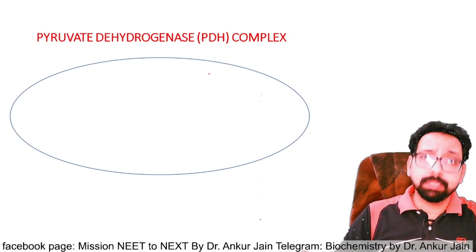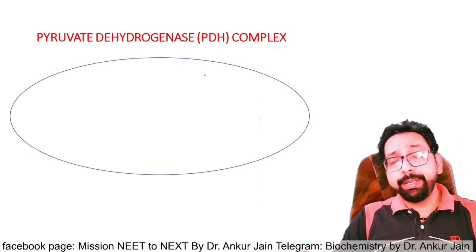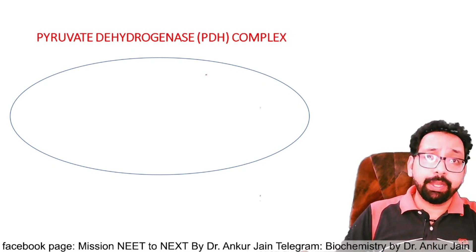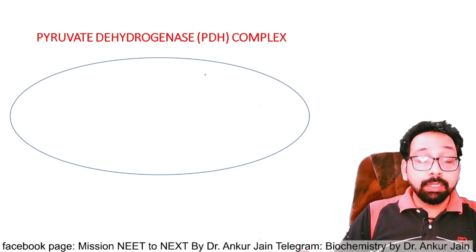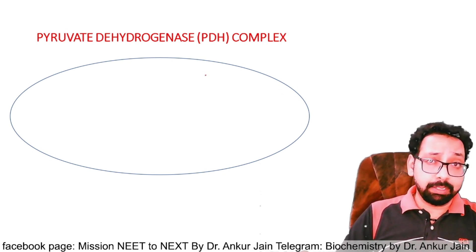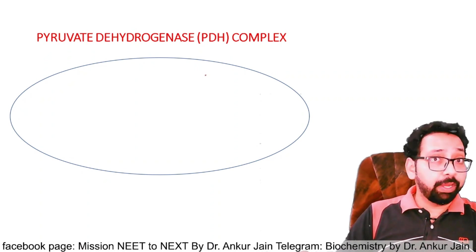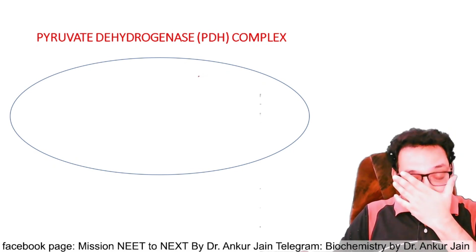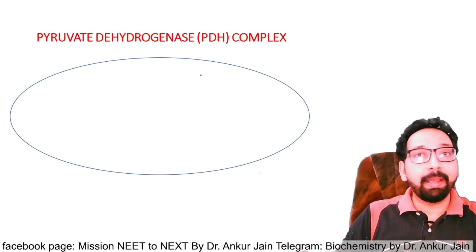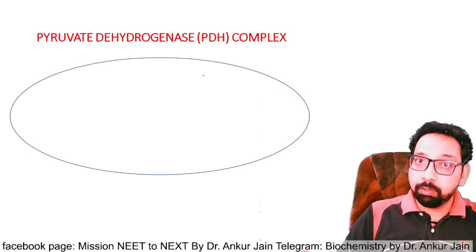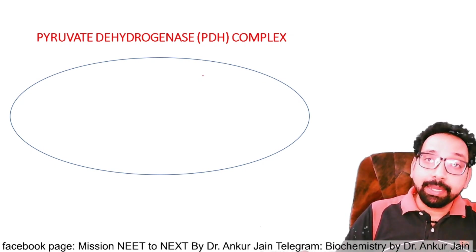Glucose has six carbon atoms and is converted to pyruvate by glycolysis. Glycolysis occurs inside the cytosol. This pyruvate then enters the mitochondria with the help of a transporter. Further metabolism of pyruvate takes place in the mitochondria.